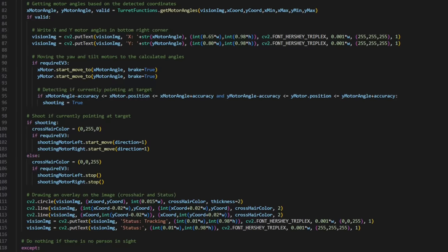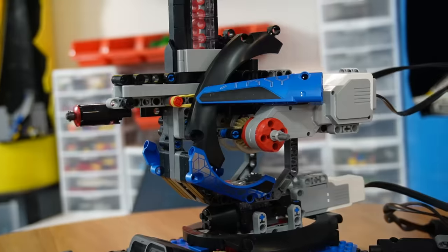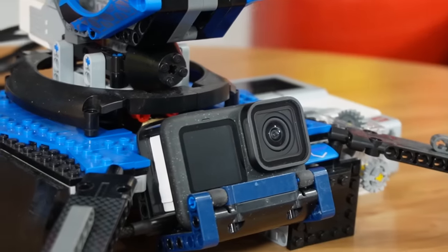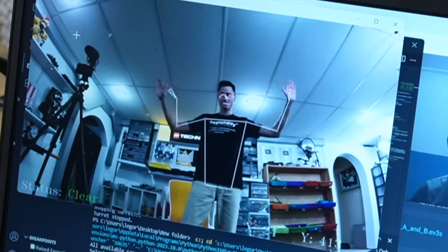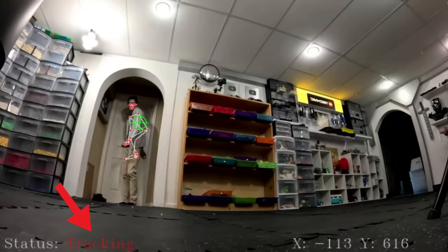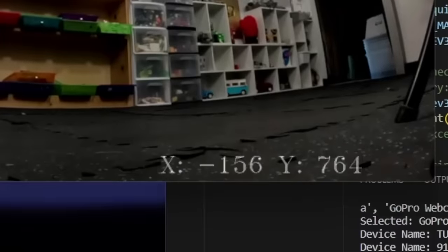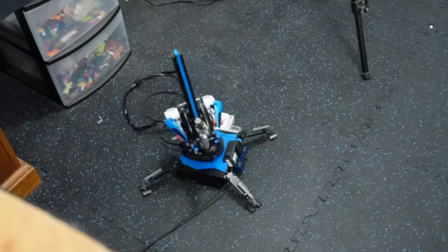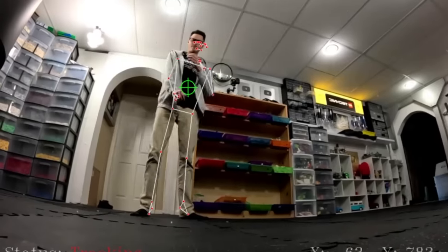This is what the code looks like. The way this works is that both the Mindstorms and the GoPro are connected to a laptop, with the laptop running the actual code. The GoPro is just always looking for a person to step into the room. As soon as it detects someone, the status changes to tracking, and it will grab the x and y coordinates of the person's chest. Now it will move towards the person until its angle is spot on. At this point the crosshair turns green and the turret starts shooting.